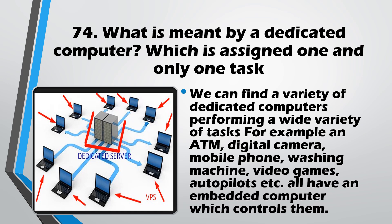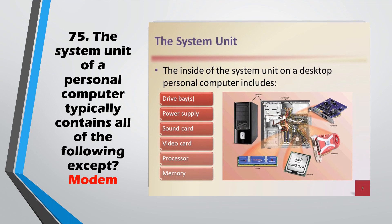Question No. 75: The system unit of a personal computer typically contains all of the following except a modem. The CPU and other devices are inside the system unit, but a modem is externally connected and is not part of the system unit.